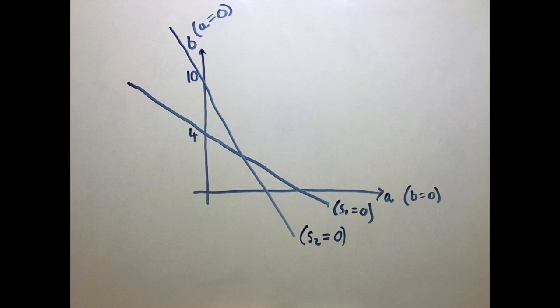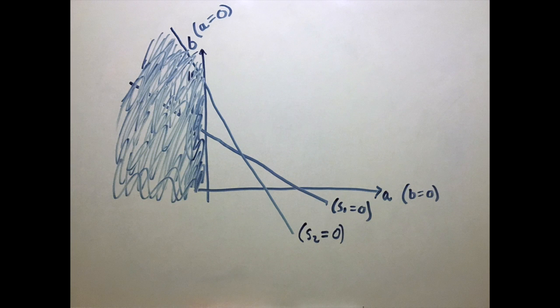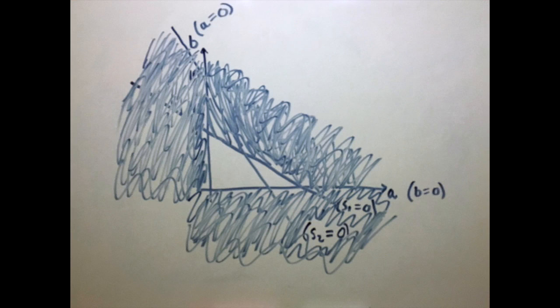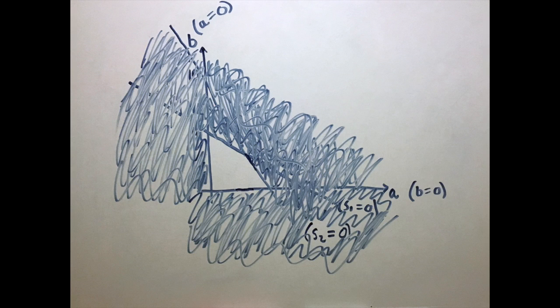We know that A has to be greater than or equal to 0, so we can rule out everything to the left of the line A = 0, and similarly we know that B has to be greater than or equal to 0, so we can rule out everything underneath the line B = 0. S1 will be less than 0 in any part of this shaded region here, and S2 will be less than 0 in any part of this shaded region here, so we can rule out these two as well.